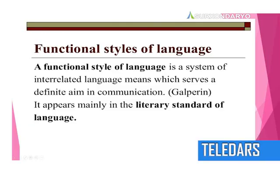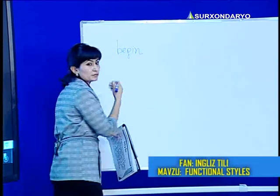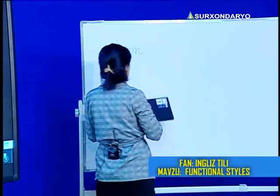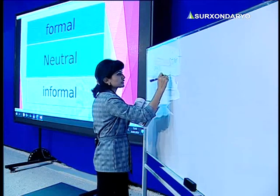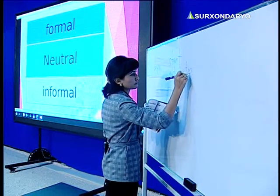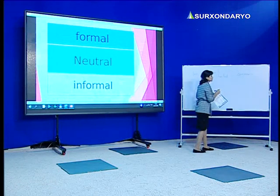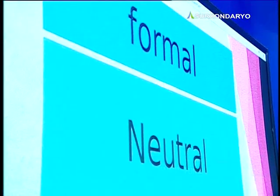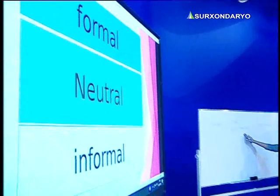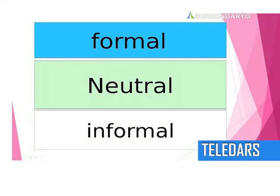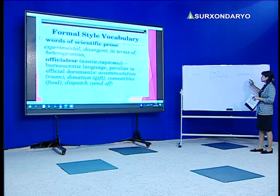Just let's see some examples. For example, we may give the word 'begin.' Begin is a neutral word. The next one is 'start' or 'get started' — that will be informal. So we can use 'start' or 'get started' when talking with friends or in chatting. And the last one is 'commence' — this is a literary one, a formal style.